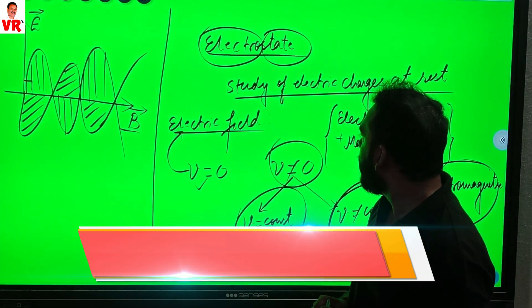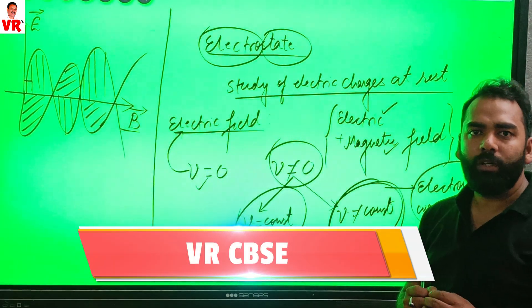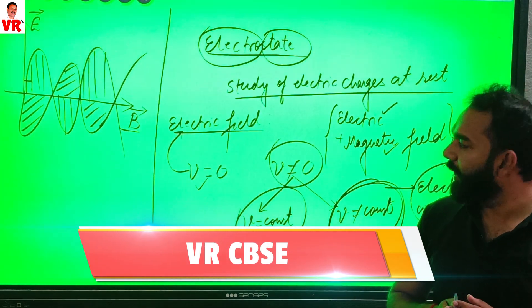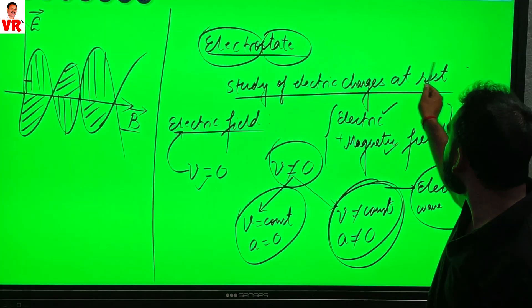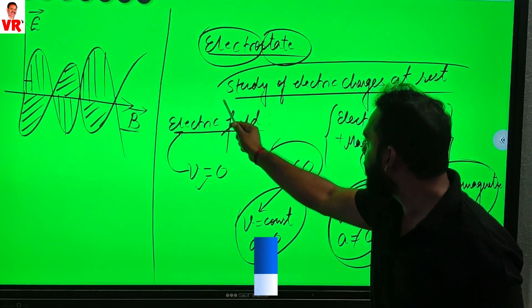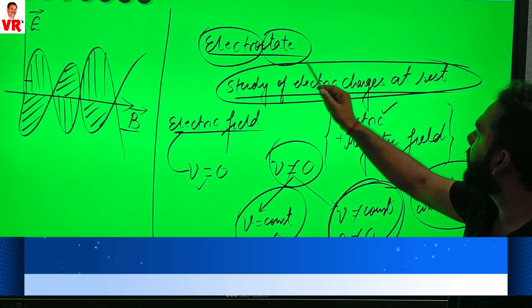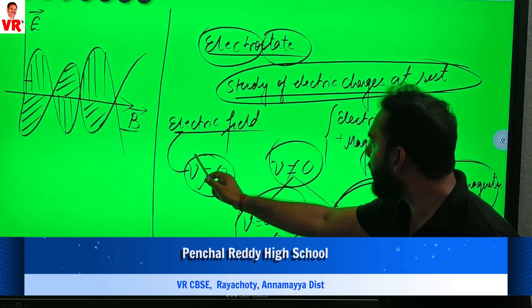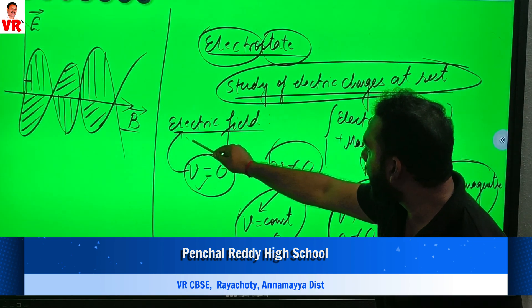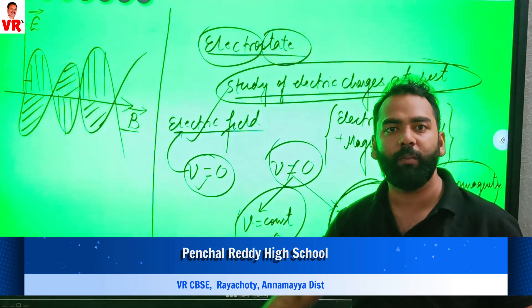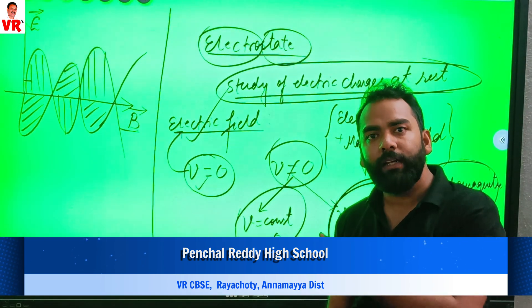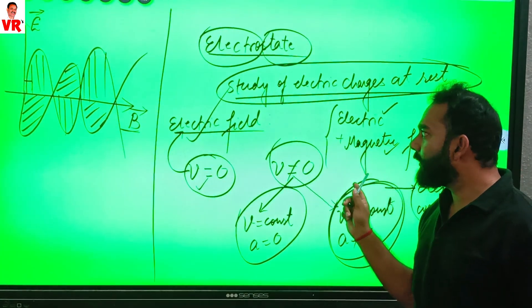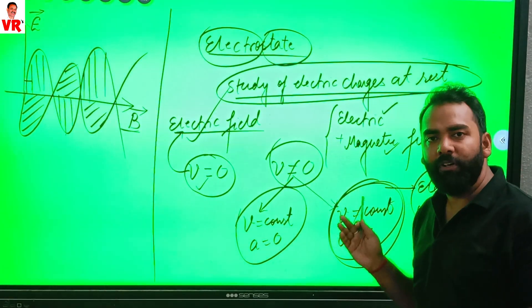In this chapter, we are going to discuss electrostatics — the study of charges at the rest position. This means charges with velocity equal to zero, which create only an electric field. So we are going to study about the electric field.